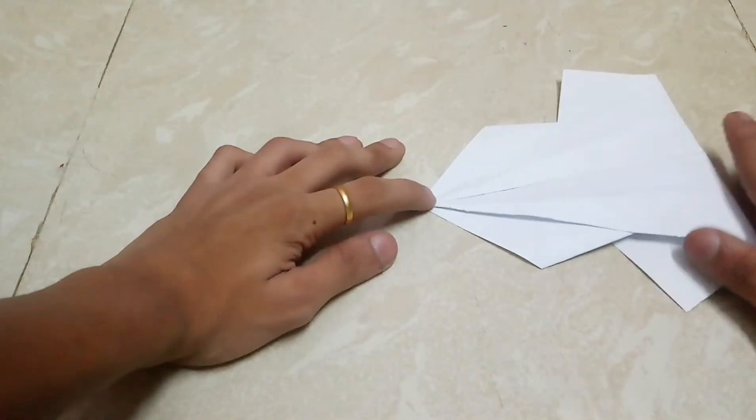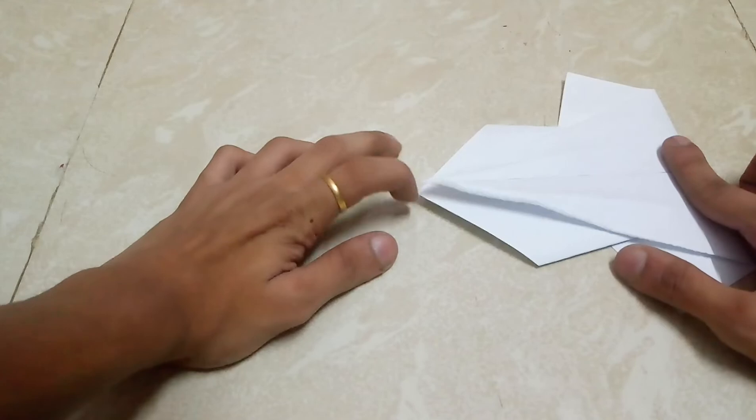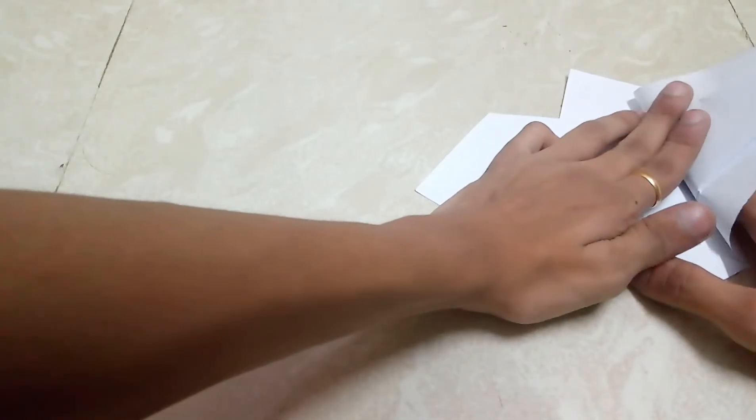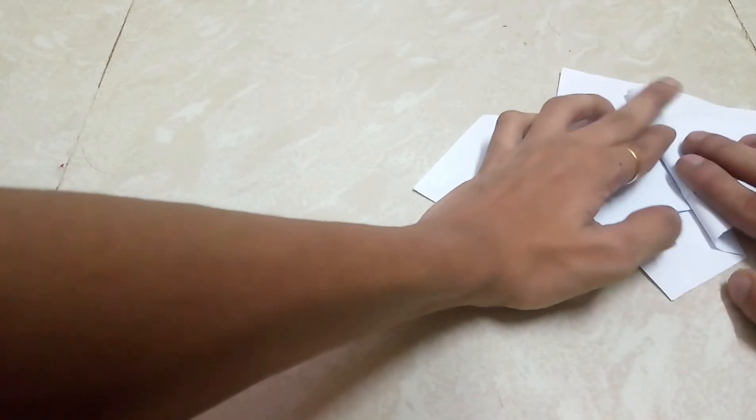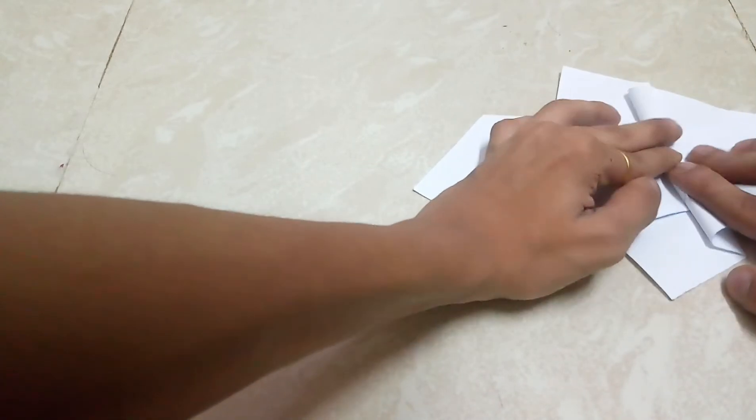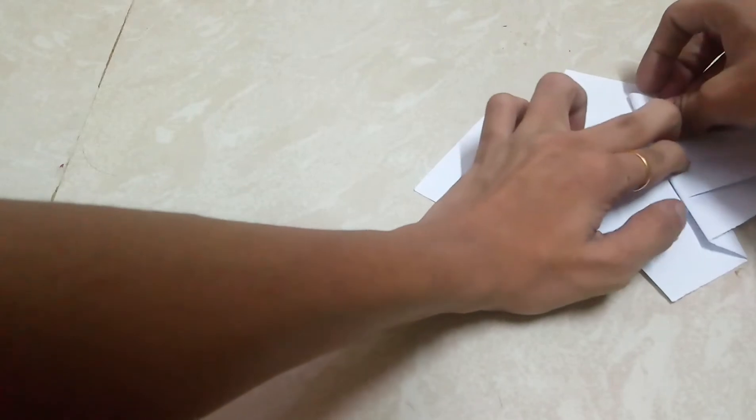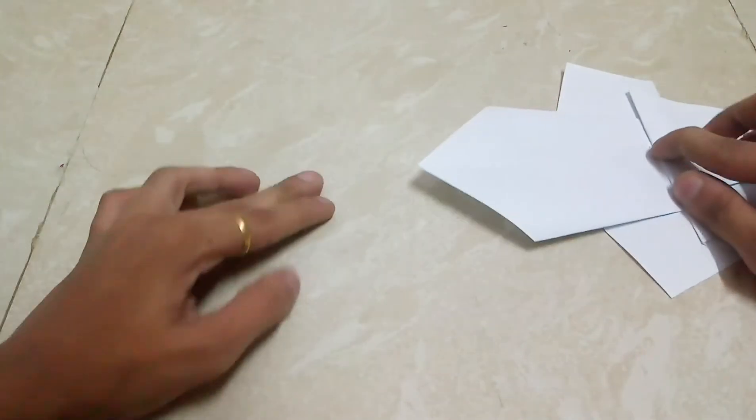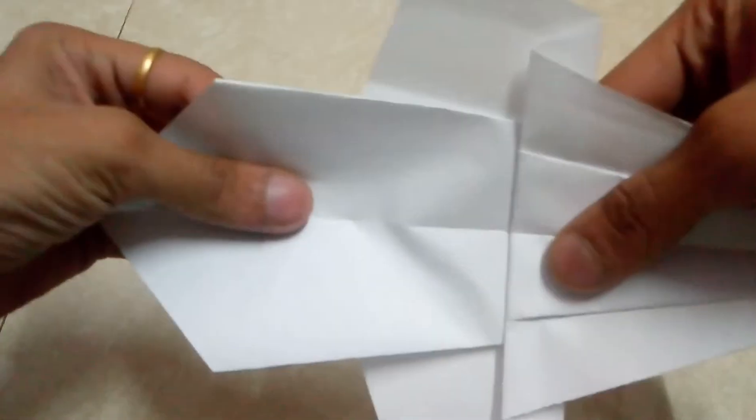After that, just flip them over, leave one finger space, and fold it over. Make sure that the middle line meets the middle line itself, just like this.